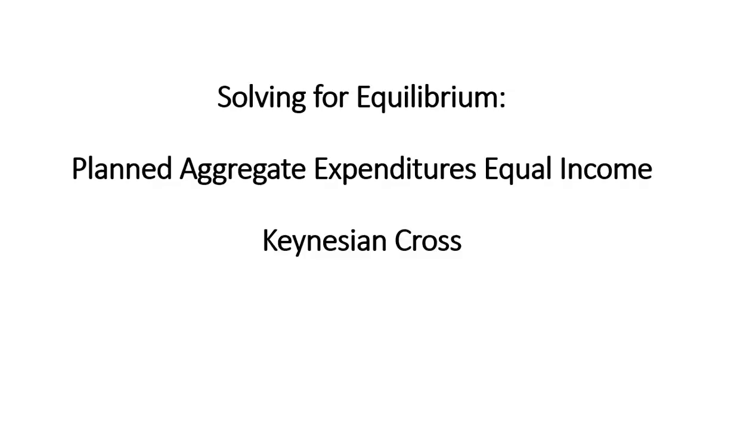Hello. In this video we're going to solve for macroeconomic equilibrium, where planned aggregate expenditures equal income. Sometimes this is known as the Keynesian cross.